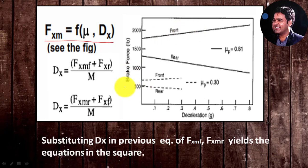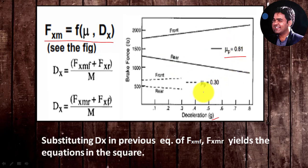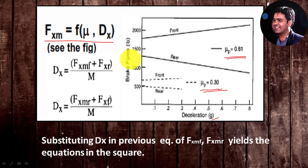We can observe the phenomena in this plot — a brake force versus deceleration in g plot — which indicates the maximum braking force at front and rear axles for different peak coefficients of friction mu for a passenger car. By observing these plots, we can see that simply changing the peak coefficient of friction produces a large difference in the maximum braking force between front and rear in both cases.